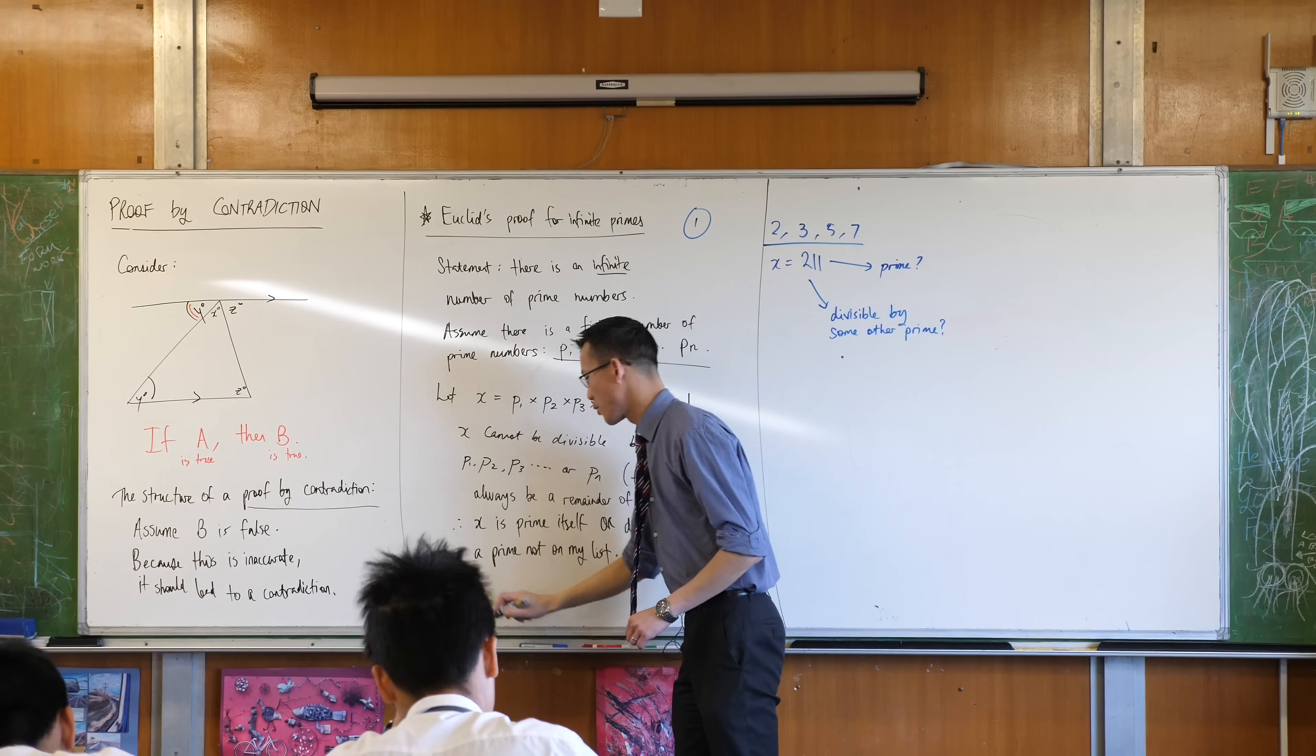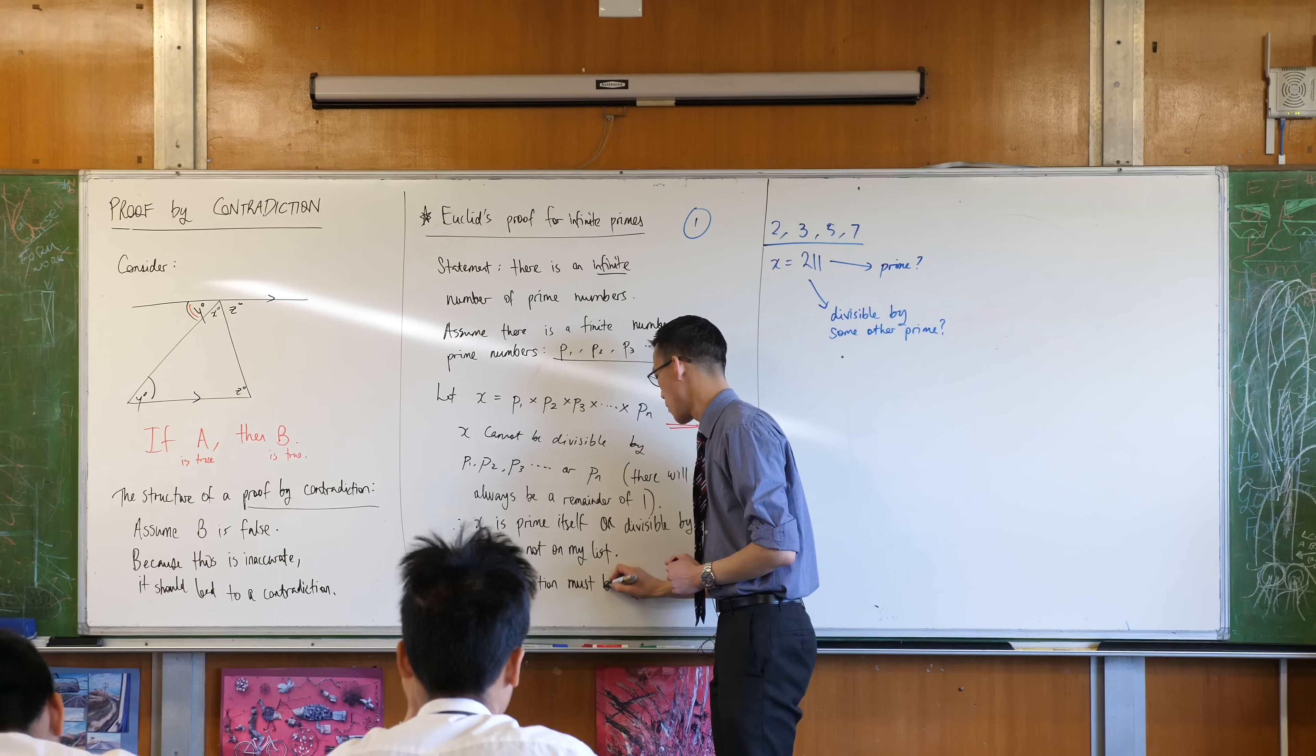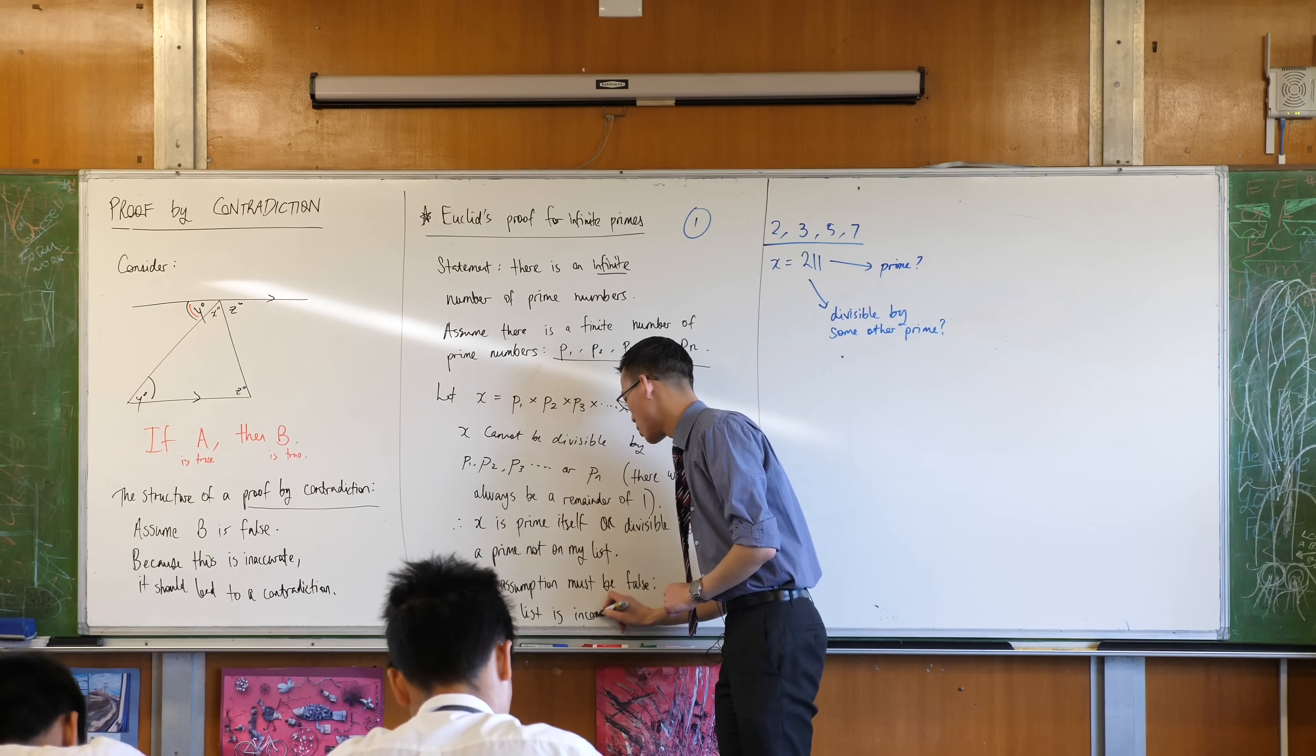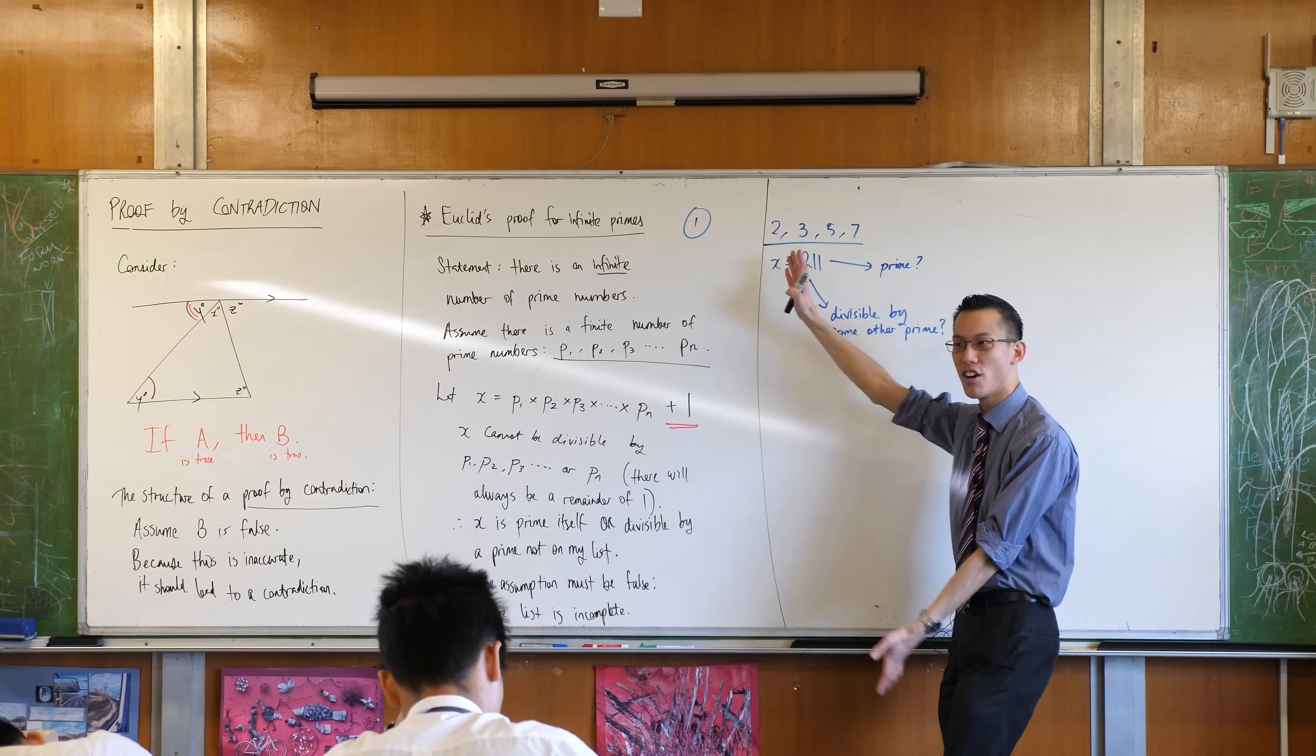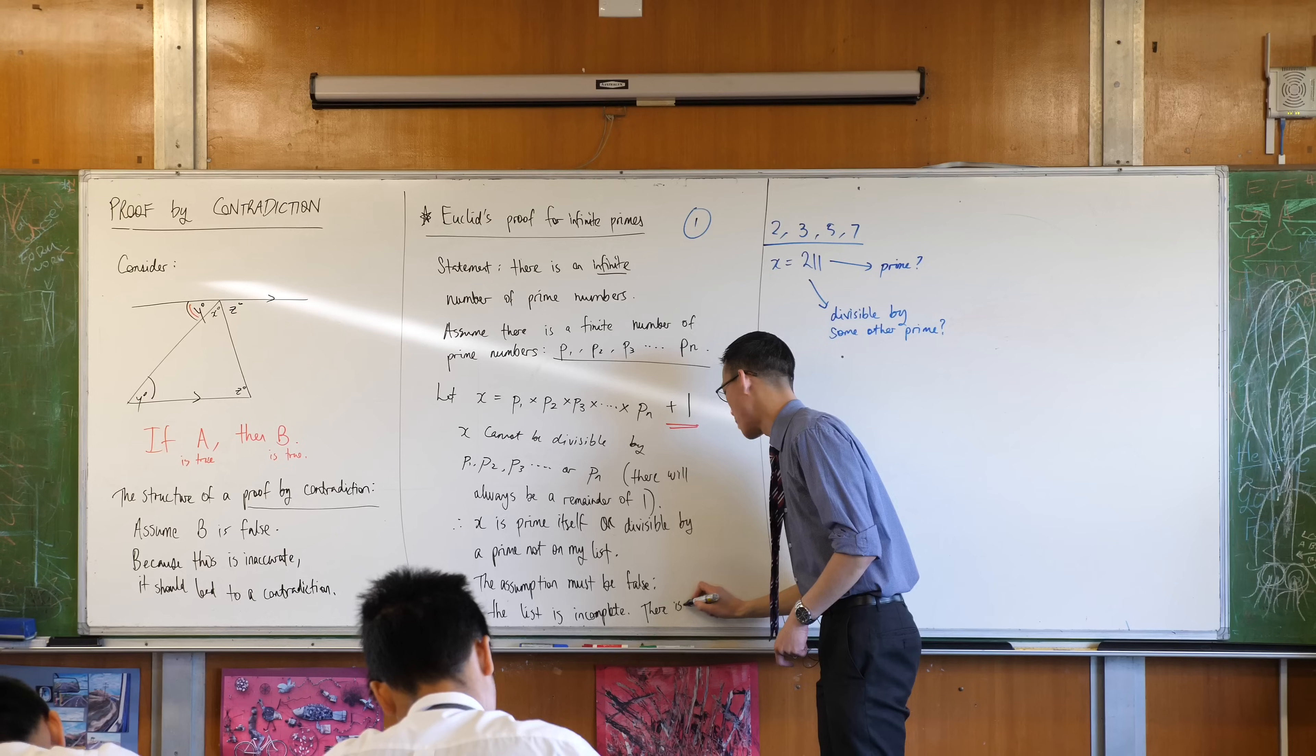So therefore, one more flow of logic, my original assumption is false. The assumption must be false. The list is not complete. And what's lovely about this is we can keep on playing this forever. It doesn't matter how big n is. n could be billions, trillions, Googols, Googolplexes long, and you can still do this trick. It might take you a while, but it will still be just as true as when we did it with just four numbers, okay? So the list is incomplete. There is an infinite number of primes.